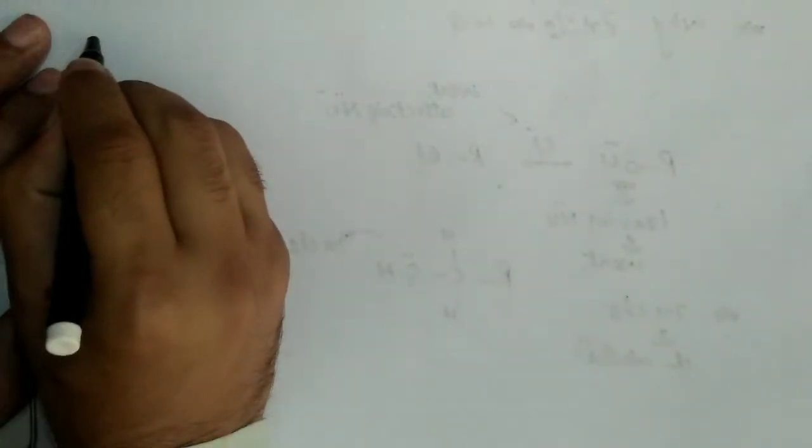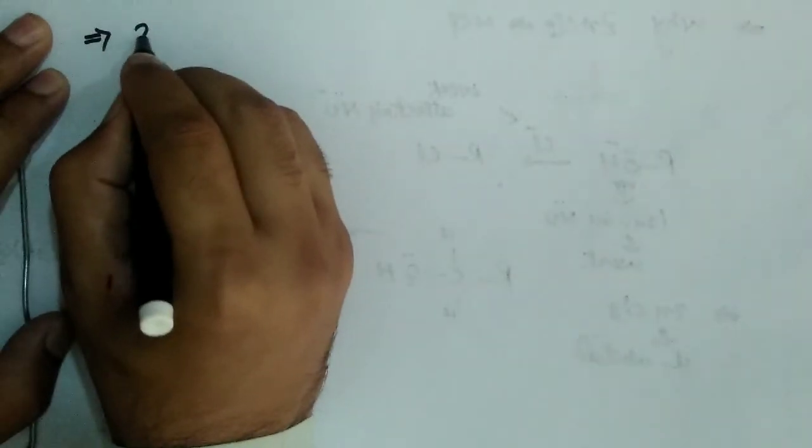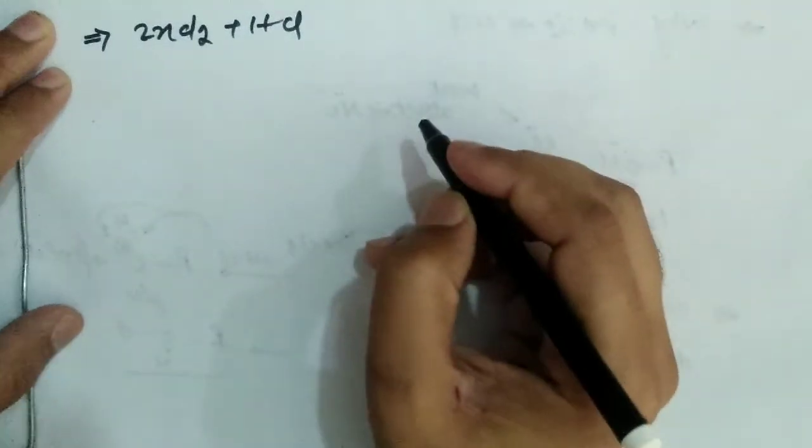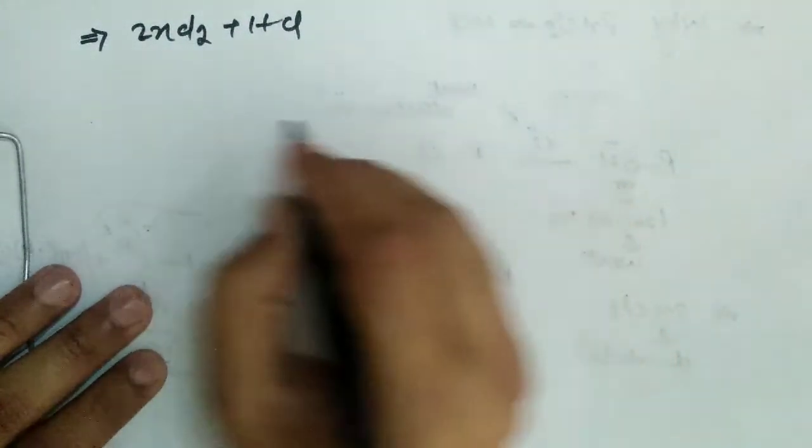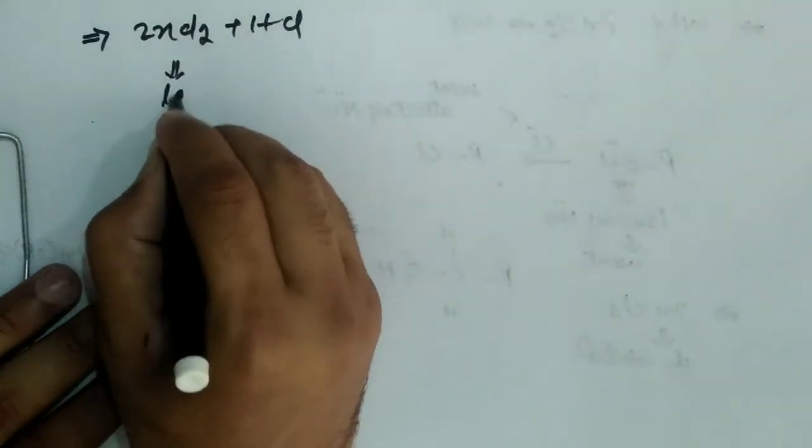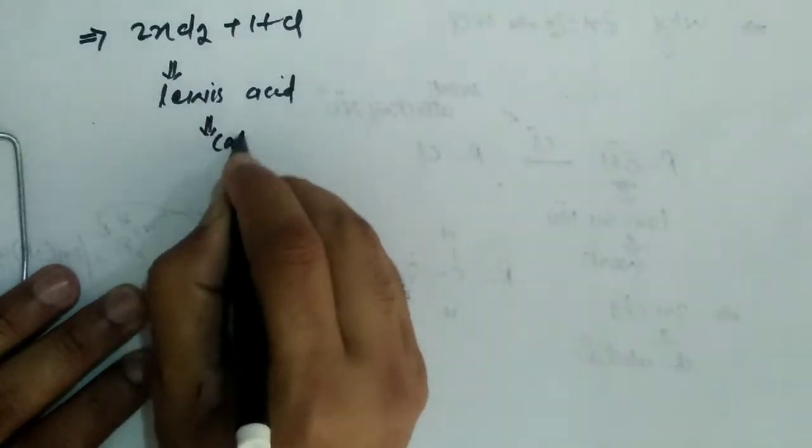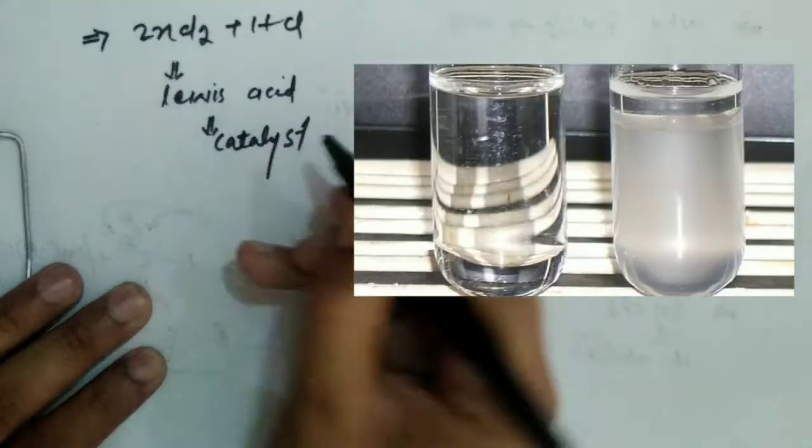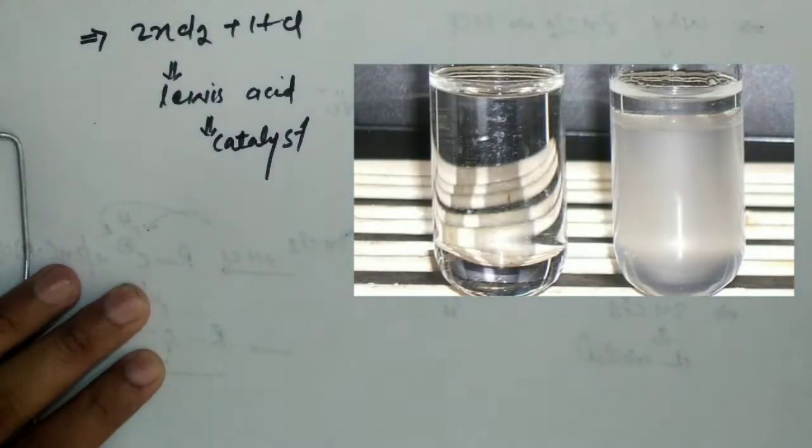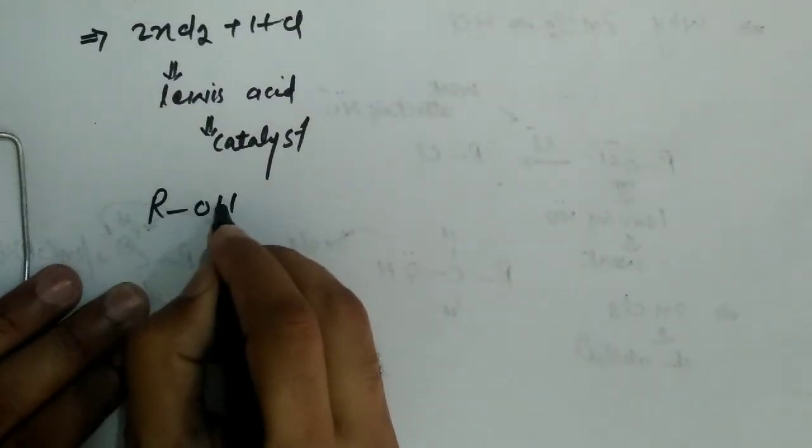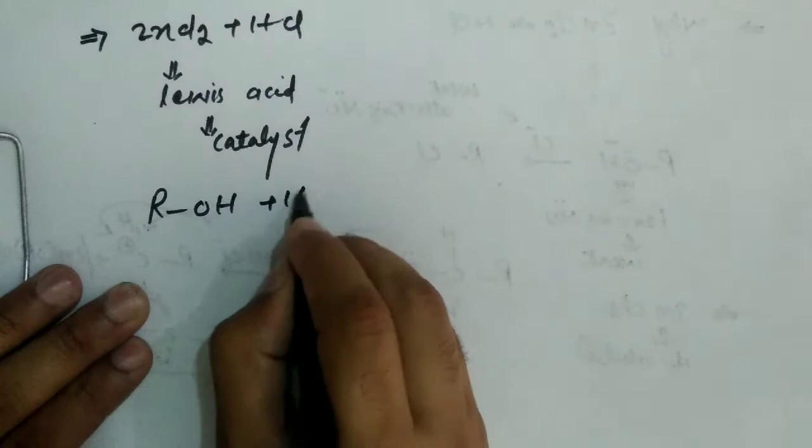Now, I am going to tell you why we use ZnCl2 with HCl. So, remember ZnCl2, which is a Lewis acid, acts as a catalyst because an alcohol plus HCl.